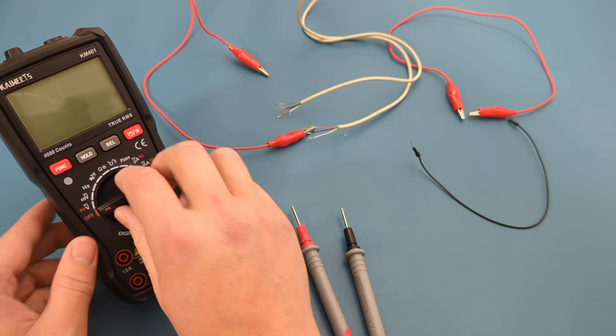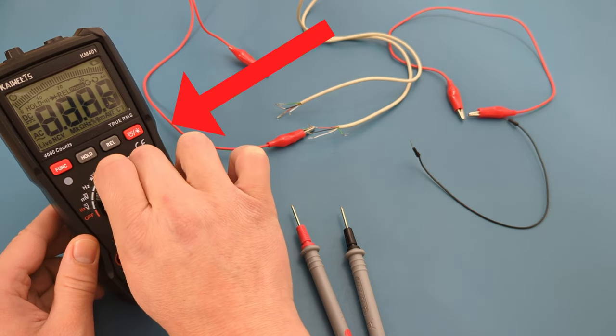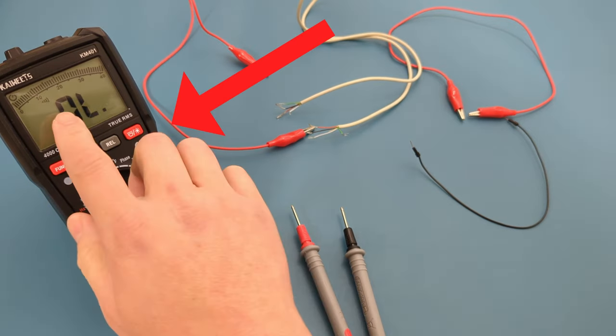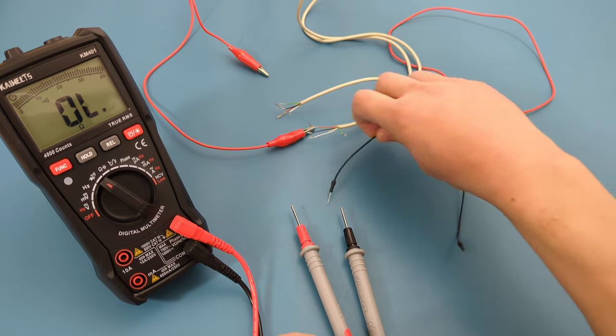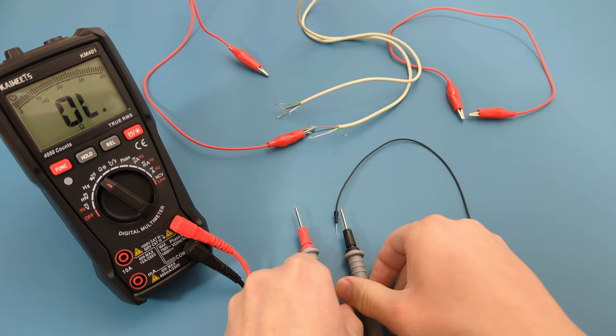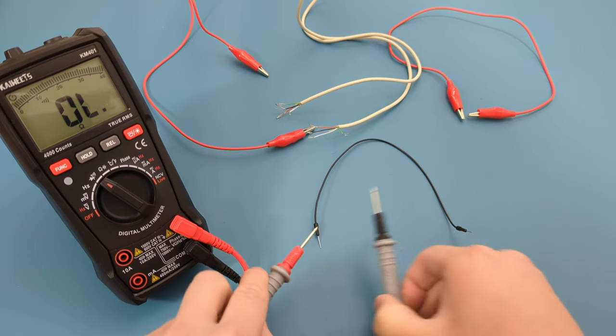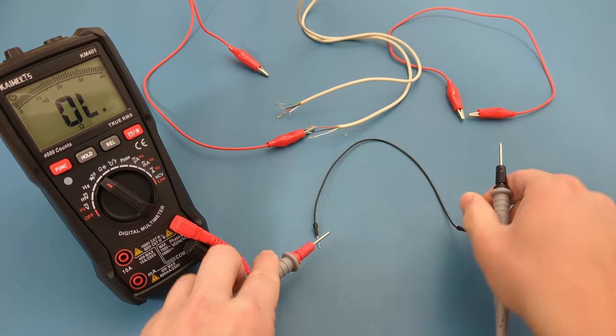On the multimeter, turn the dial to the continuity setting. The continuity symbol looks like sound waves. Let's check the black alligator wire to verify its continuity. Place the probe leads on each end of the wire.